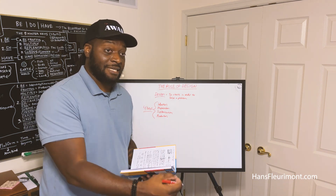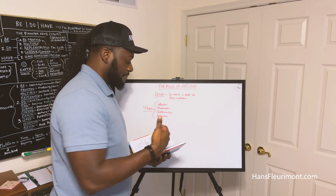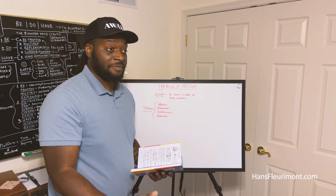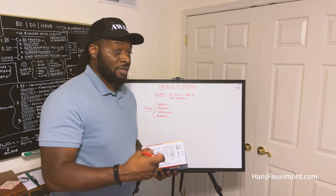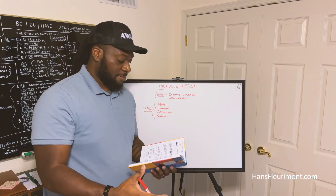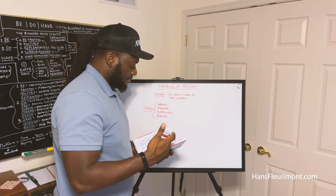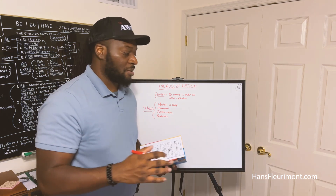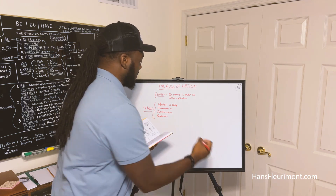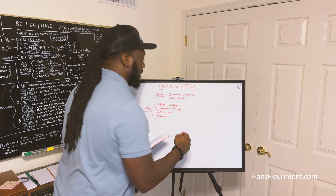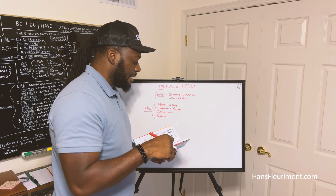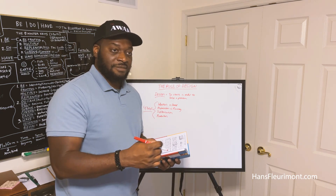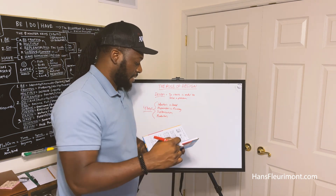The first stage, ideation, is about formulating the idea. There must be a problem to solve first — ideation is coming up with a way to solve that problem. Preparation is the planning stage. It's the strategy: creating a plan of action for the idea and figuring out how to make it a reality.